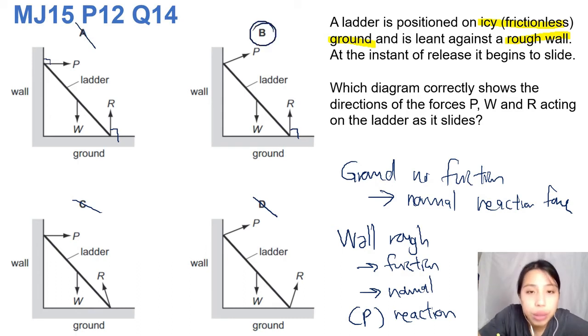Why? Because if we break down the components of P, it's going to be one this way, and this is a brighter color, one up. So this one is your friction force, and the other one is your normal reaction force.